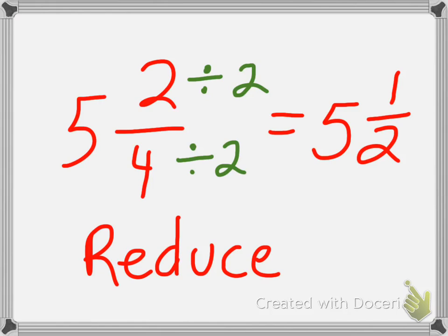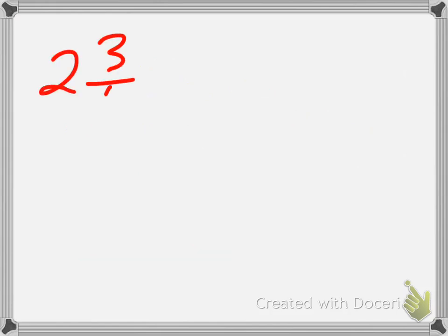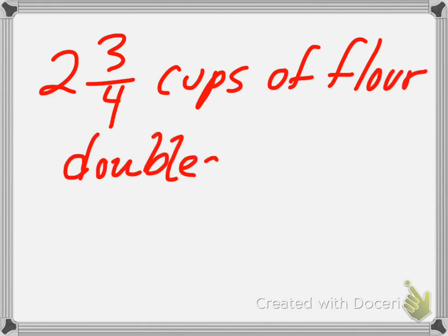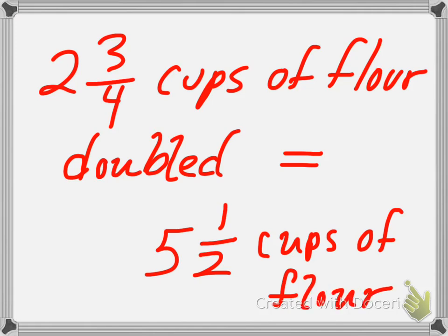So the answer, how many cups of flour do we need? 2 and 3 fourths cups of flour doubled equals 5 and a half cups of flour to make 48 cookies.